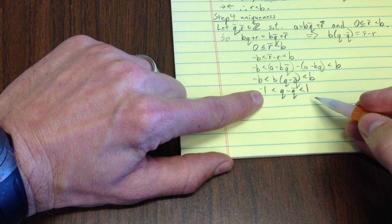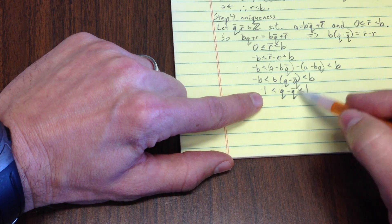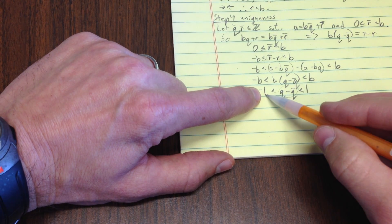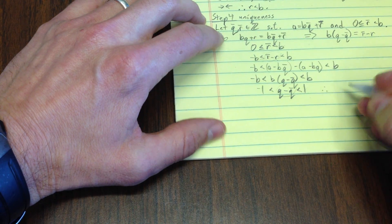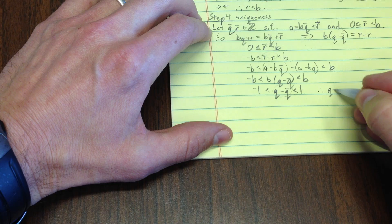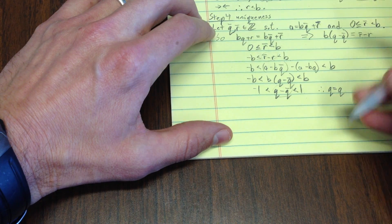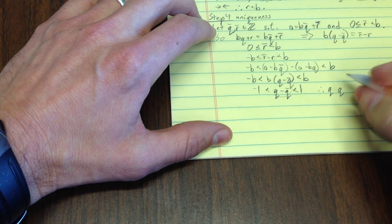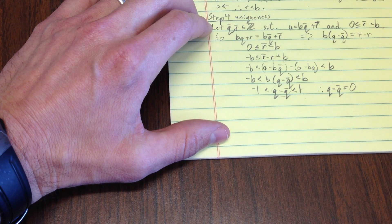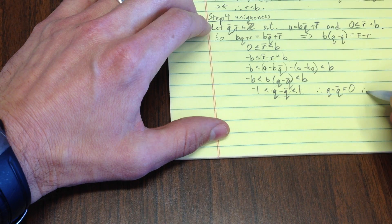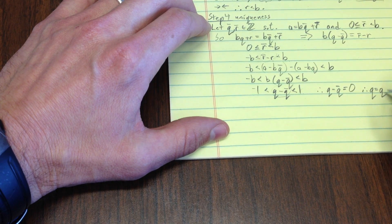Well, these are integers, right? So, this is an integer, it's greater than negative 1, less than 1. Therefore, q minus q bar equals 0, right? Well, what's that mean? Therefore, q equals q bar.